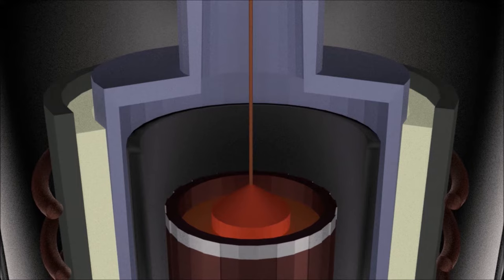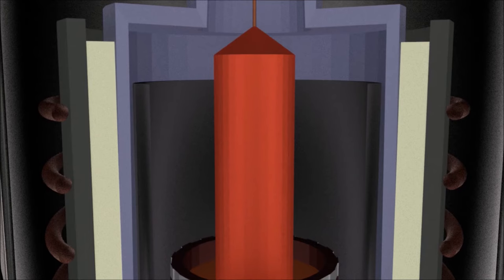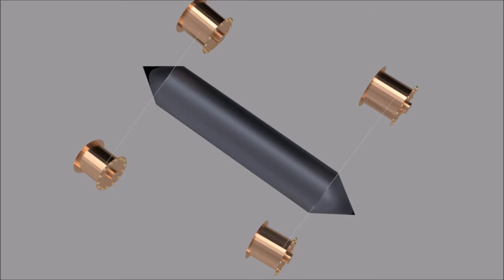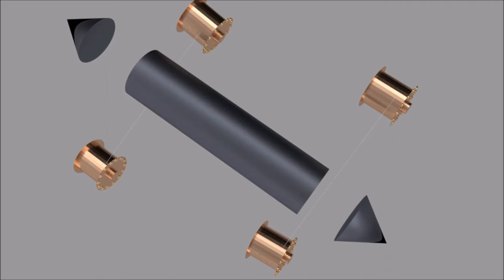The seed is then slowly pulled from the melt, growing a single crystalline ingot. The diameter of the ingot is controlled by the pulling speed, while rotation of the seed and melt allows for a uniform doping distribution. After the ingot is fully formed,